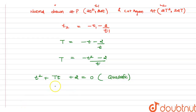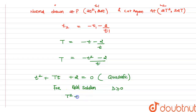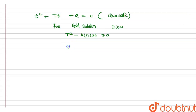For real solutions of this quadratic equation, the discriminant D must be greater than or equal to 0. Computing D = T² - 4(1)(2) ≥ 0, which simplifies to T² ≥ 8. This is condition 1.